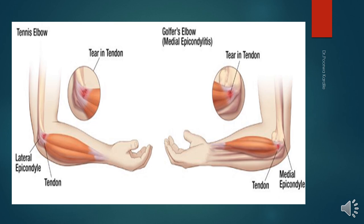In golfer's elbow, all five superficial flexors of the forearm — pronator teres, flexor carpi radialis, palmaris longus, flexor carpi ulnaris, and flexor digitorum superficialis — share a common flexor origin from the medial epicondyle of the humerus. Repetitive use of these superficial flexors, as observed during golf, strains the common flexor origin and causes inflammation of the medial epicondyle (medial epicondylitis), characterized by pain on the medial side of the elbow.